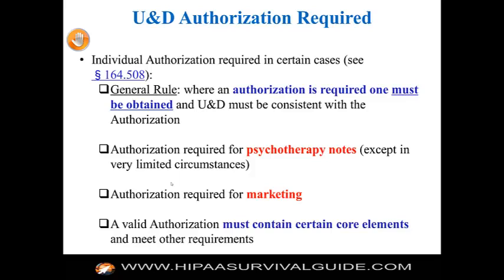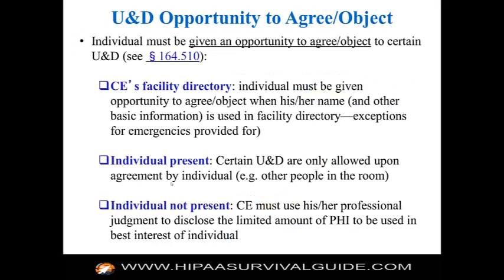Under the omnibus rule, authorization is required if a covered entity or business associate wants to sell its PHI to a third party for marketing purposes. Under 164.510, uses and disclosures with an opportunity to agree or object: a covered entity's facility directory allows an individual to say yay or nay whether they want their name listed. If an individual is present and there are other people in the room, you have to ask the individual whether they can disclose PHI in front of this particular group or whether they want the group to exit.